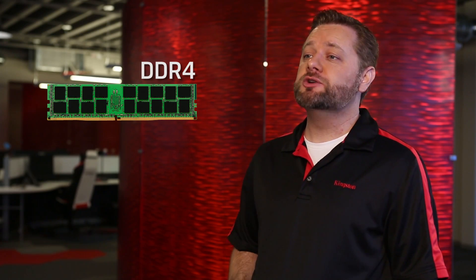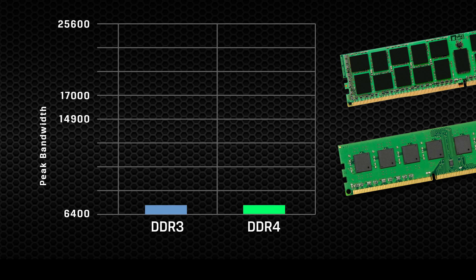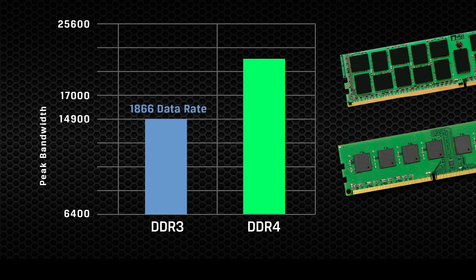After many years in development, DDR4 introduces a number of improvements over the previous generation DDR3. For example, DDR4 is capable of much higher speeds than DDR3, with a starting speed of 2133, and planned speed increases that could take it well over 3200.